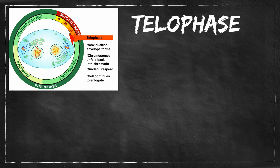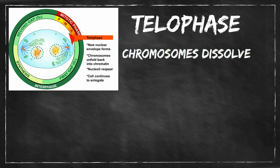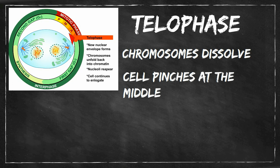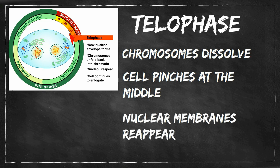So as a recap, during telophase chromosomes dissolve, the cell begins to pinch in at the middle, and then the nuclear membranes begin to appear.